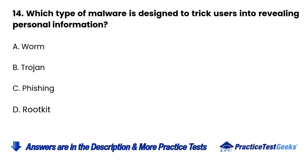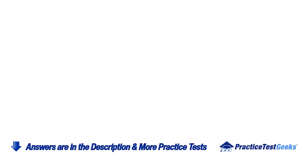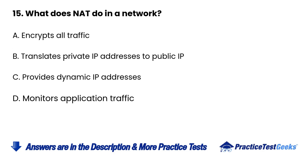Question 14: Which type of malware is designed to trick users into revealing personal information? A. Worm. B. Trojan. C. Phishing. D. Rootkit.